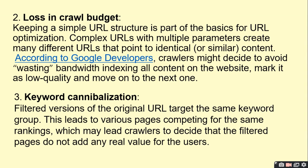Keeping a simple URL structure is a basic part of URL optimization. A simple parameter path structure is important. Complex URLs with multiple parameters create many different URLs that point to identical content. If you add parameters, the same type of page will appear different in the URL while showing similar content. Google might decide to avoid wasting bandwidth indexing all content on the website, mark it as low quality, and move on to the next work.